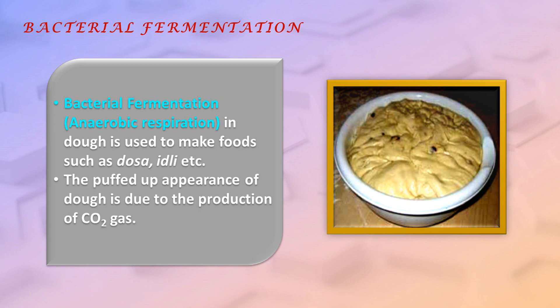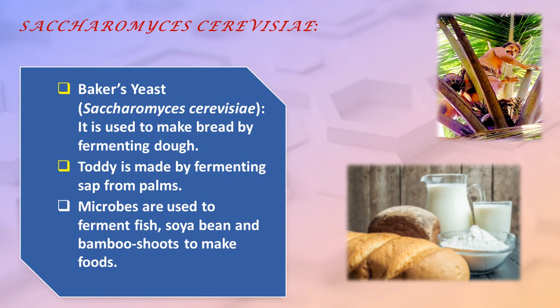Bacterial fermentation, that is anaerobic respiration in dough, is used to make foods such as dosa, idli, etc. The puffed-up appearance of dough is due to the production of CO2 gas. Saccharomyces cerevisiae, commonly known as baker's yeast, is used to make bread by fermenting dough.